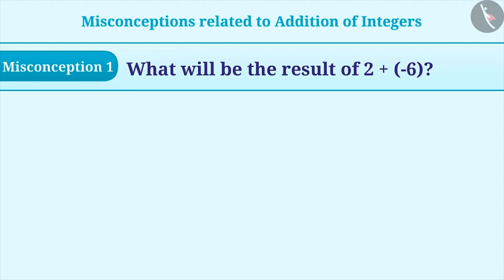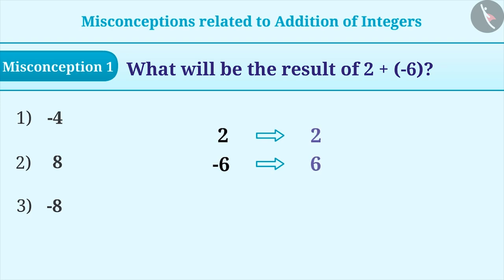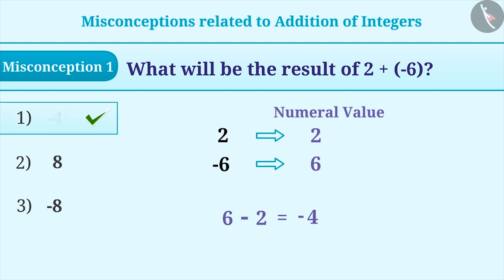Misconception 1. What will be the result of 2 plus minus 6? For the addition of numbers having opposite signs, first we will find the value of numbers ignoring their signs, which we call as numeral value. Then, we will subtract the smaller numeral value from the greater numeral value and put the sign of the greater numeral value to the result. By doing so, we get the correct answer, option 1, which is minus 4.